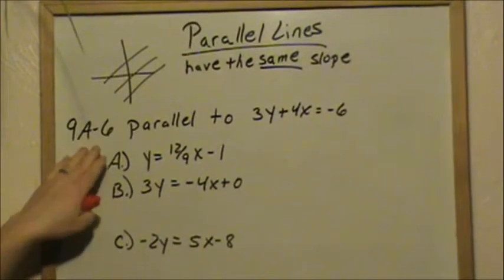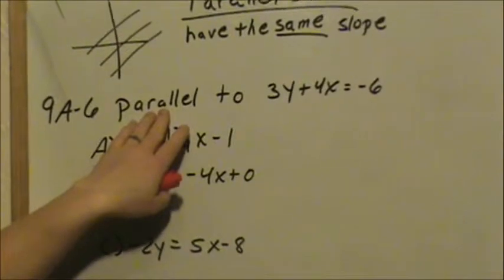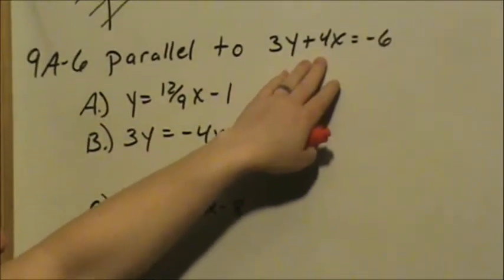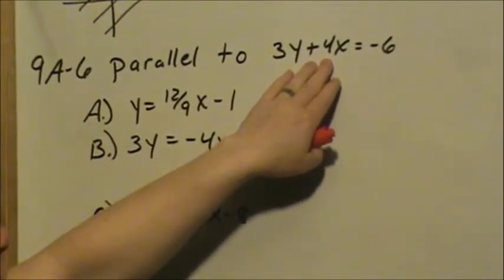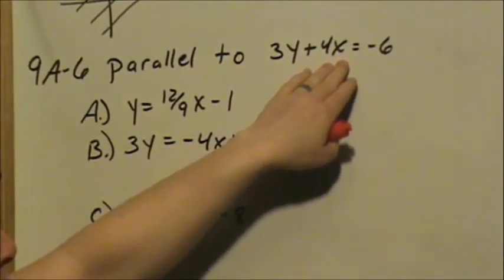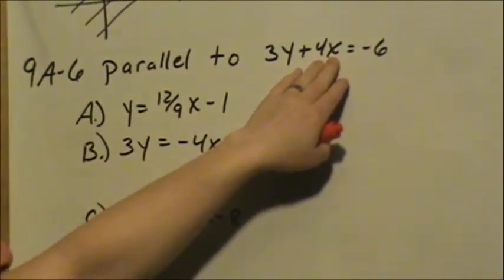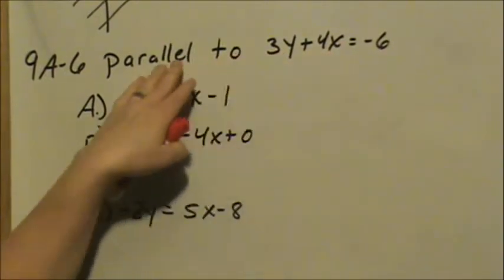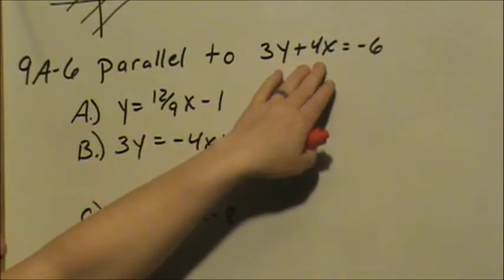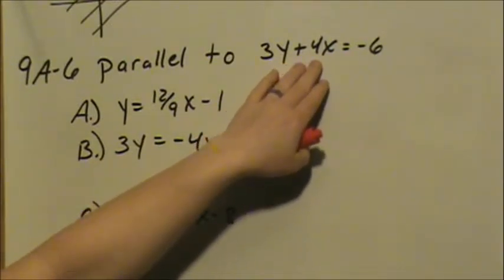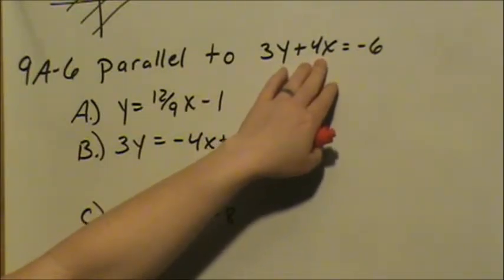Looking at 9A-6, the problem says we want parallel to this line. If parallel lines have the same slope, we need to put this equation in slope-intercept form to be able to determine the slope. The only way you can see the slope of a line is when it is in slope-intercept form. Right now, this is in standard form and it needs to be changed into slope-intercept form.